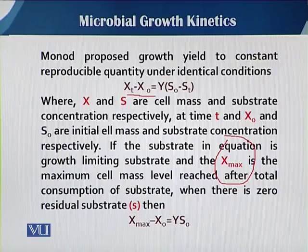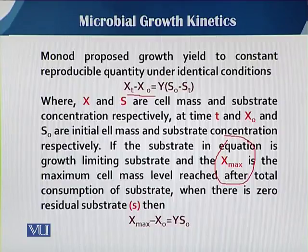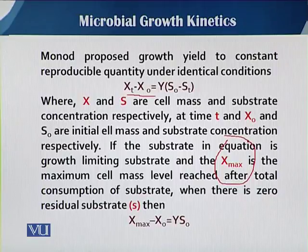Sometimes the media does not contain only a single substrate — it has a number of substrates including carbon source, nitrogen source, and other micro and macronutrients. Sometimes, out of all these nutrients, any one of them can become limiting, which can affect mu or growth. Mu max is only achieved when there is no limiting substrate.